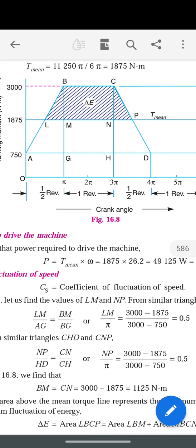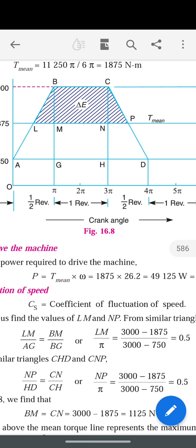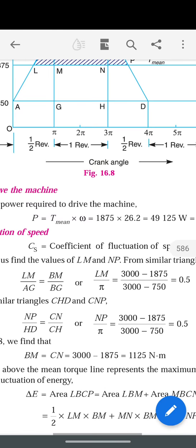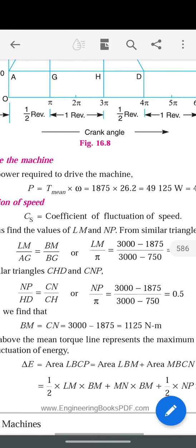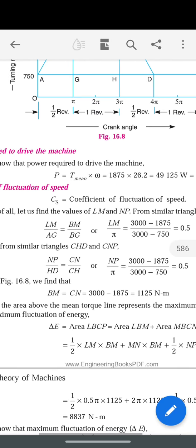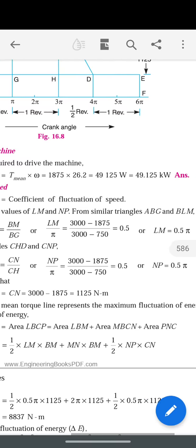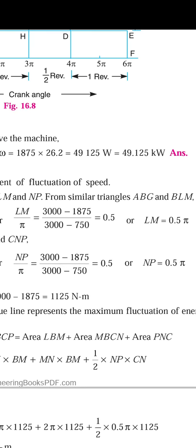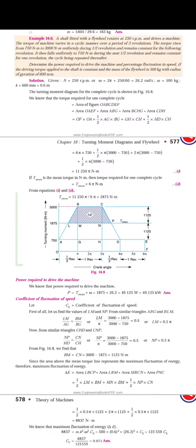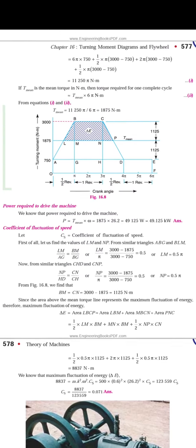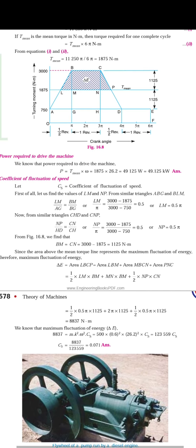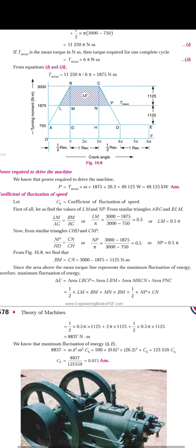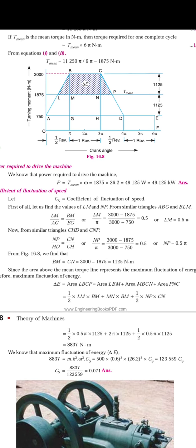Similarly, triangles CNP and CHD are similar triangles. Using the same similar triangle concept, we can calculate NP, which also equals 0.5π. After calculating these unknown values, we proceed to calculate the areas of BLM, BCMN, and CNP.